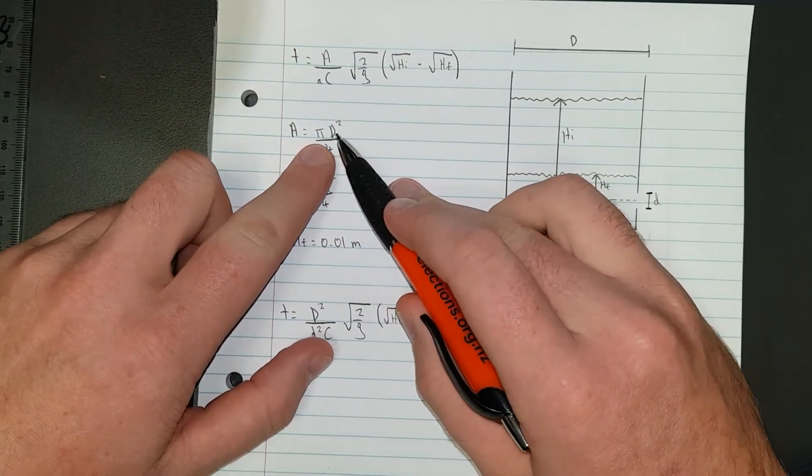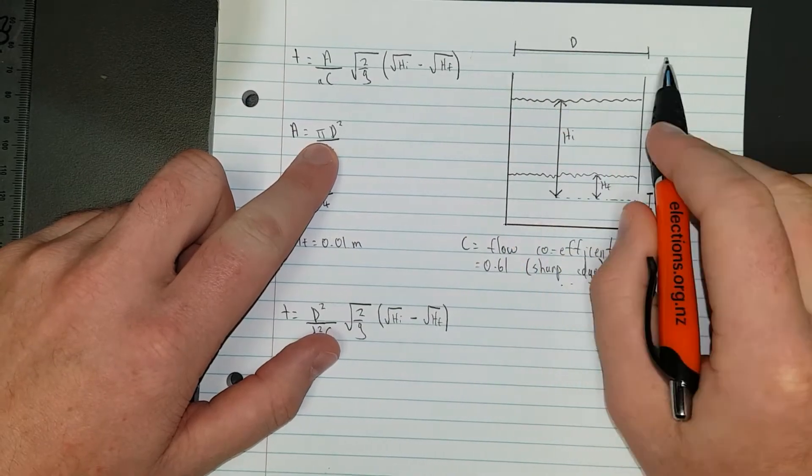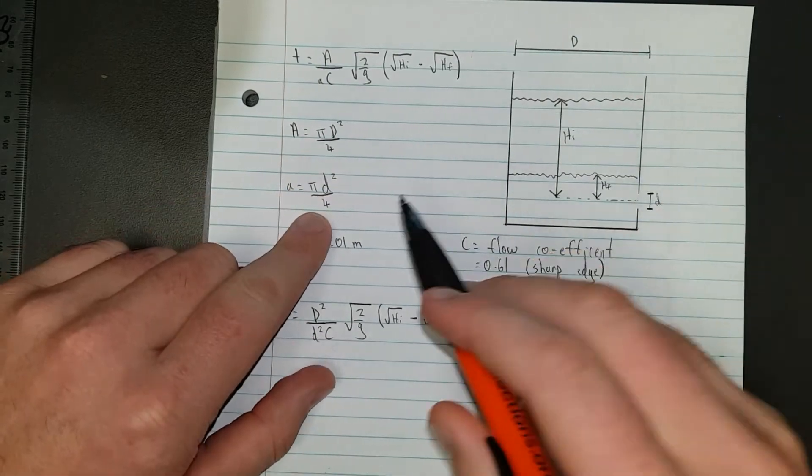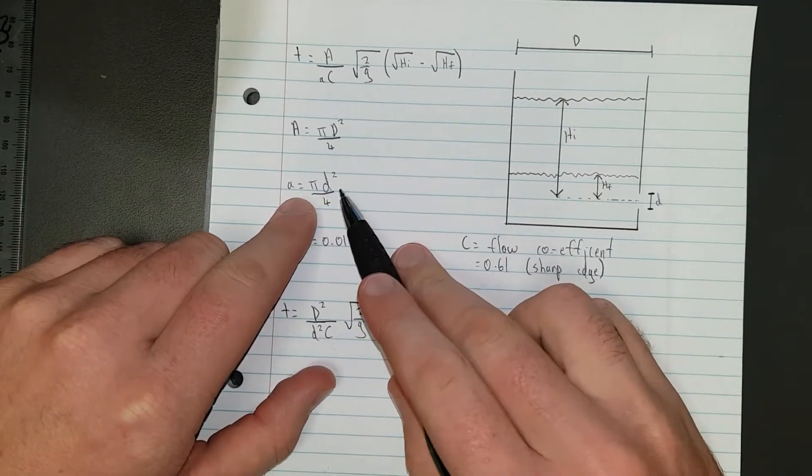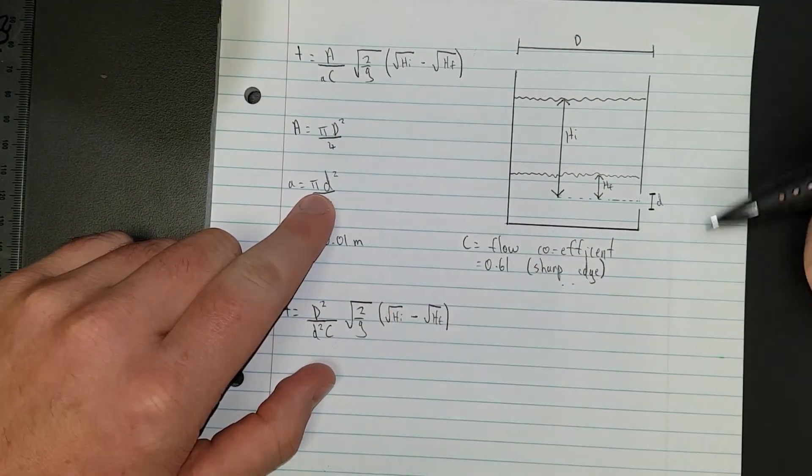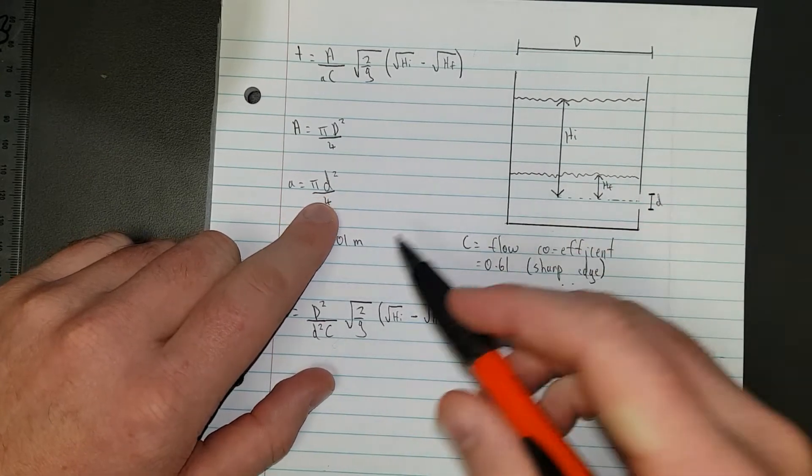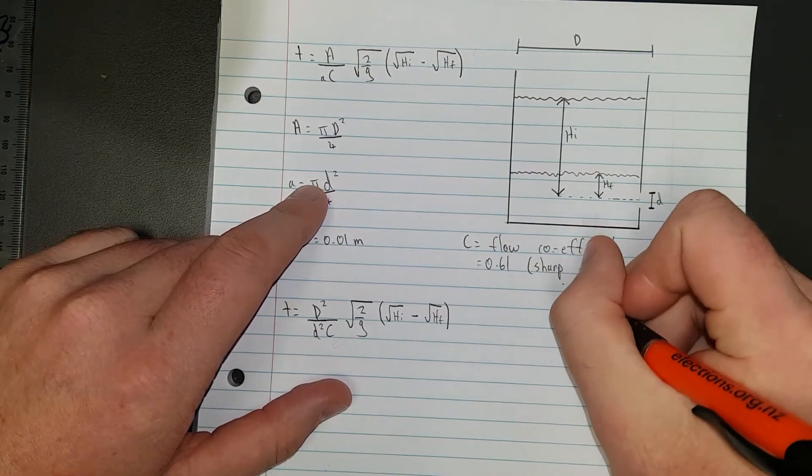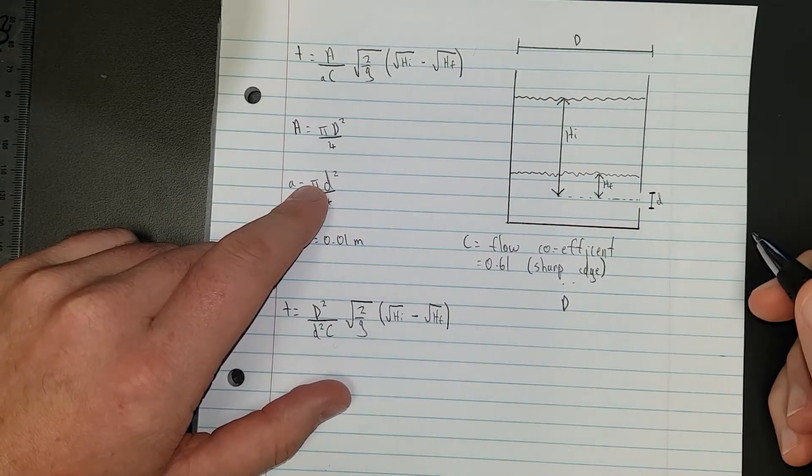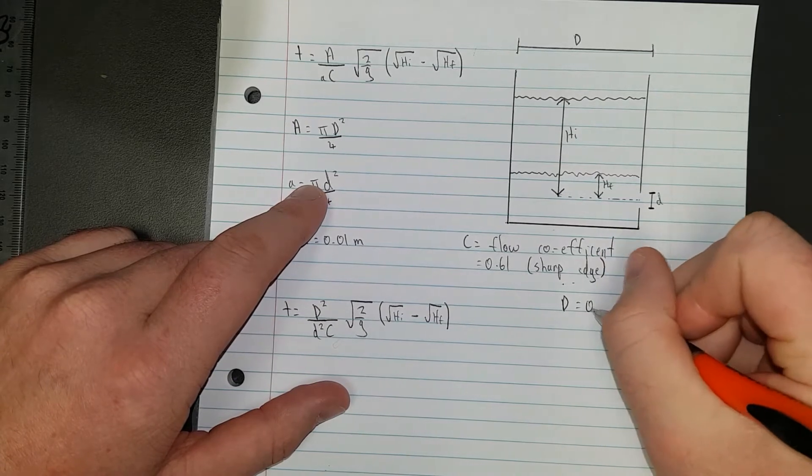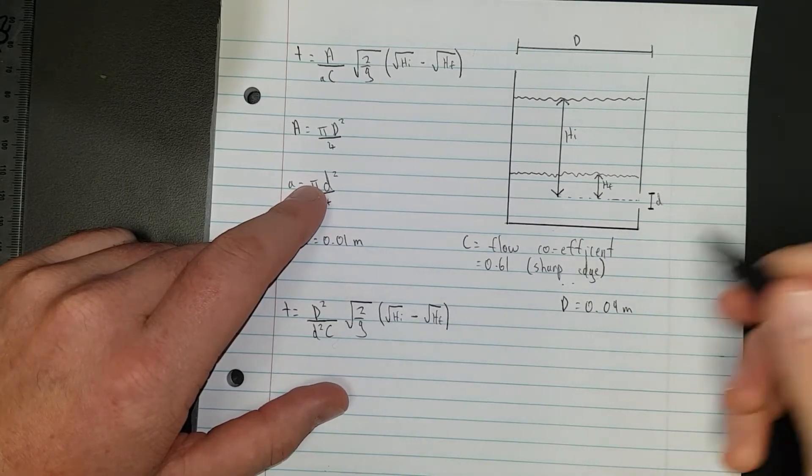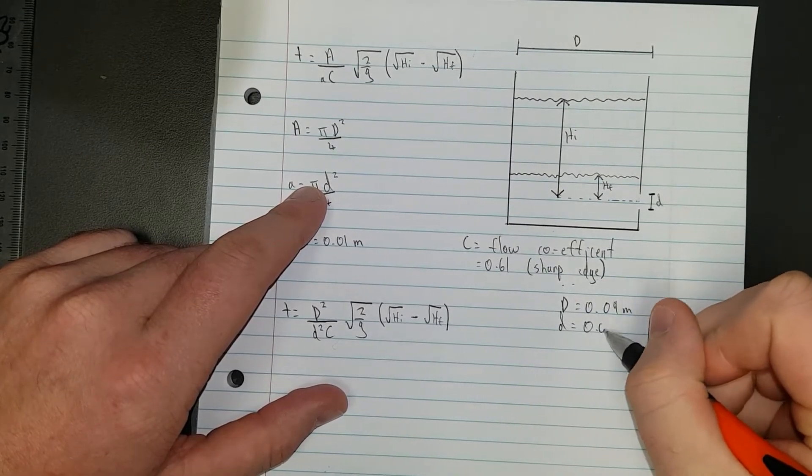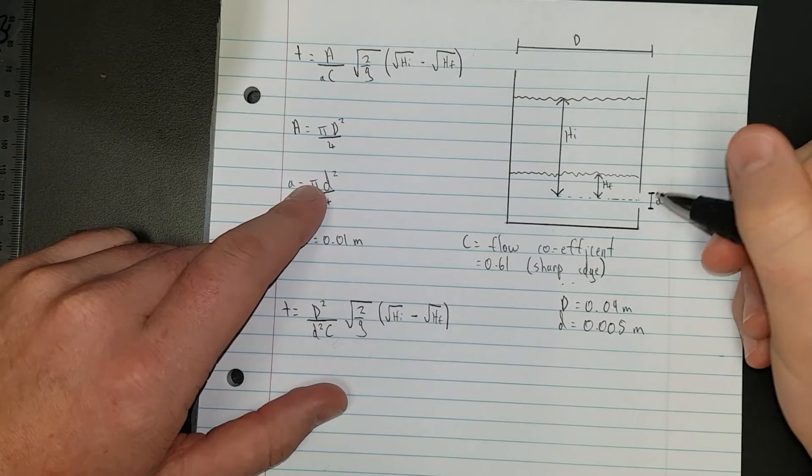Big A is pi times the diameter of the water bottle squared over 4, and little a is pi times d squared, which is the diameter of the hole, over 4. My big D is 0.09 meters (9 centimeters), and the little d was 0.005 meters (5 millimeters across).